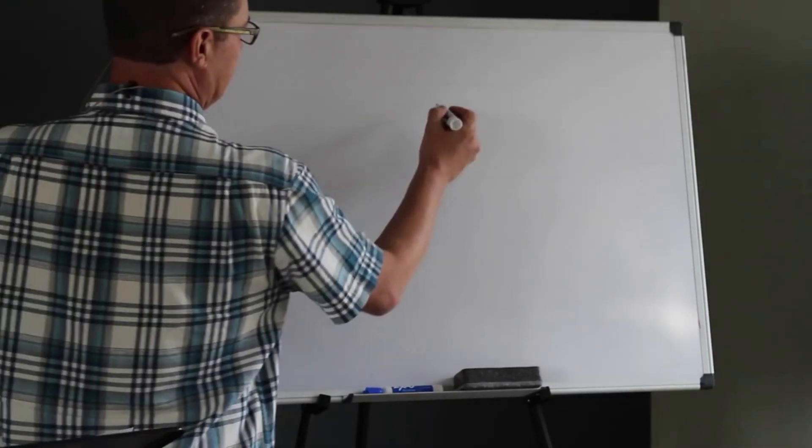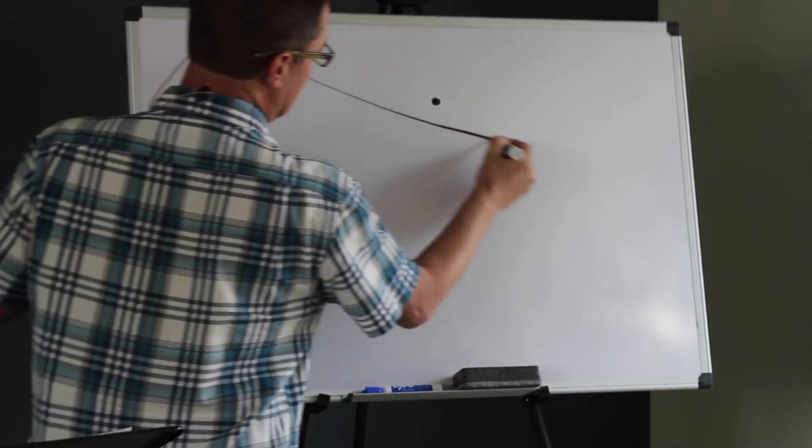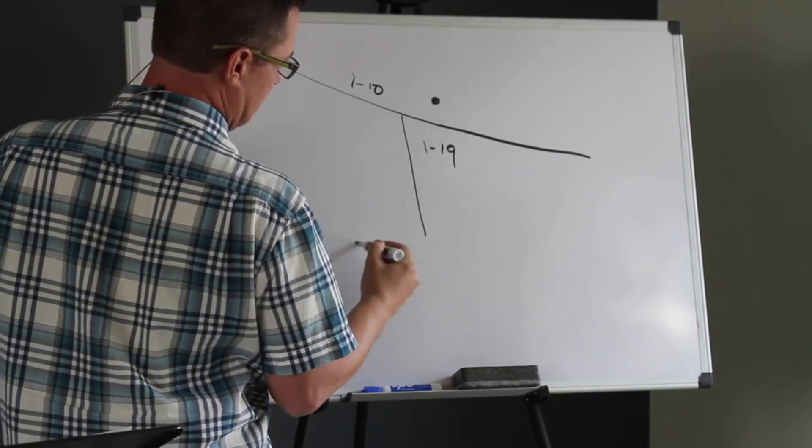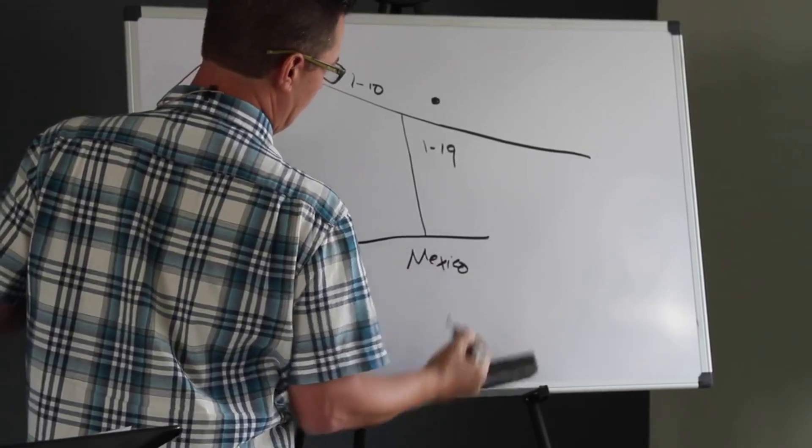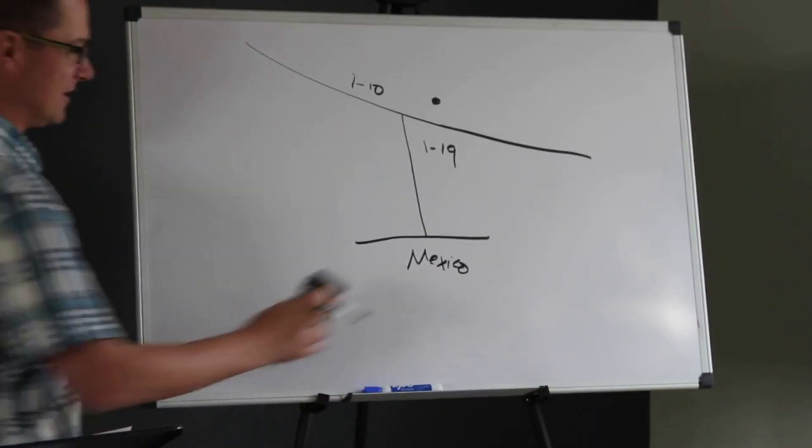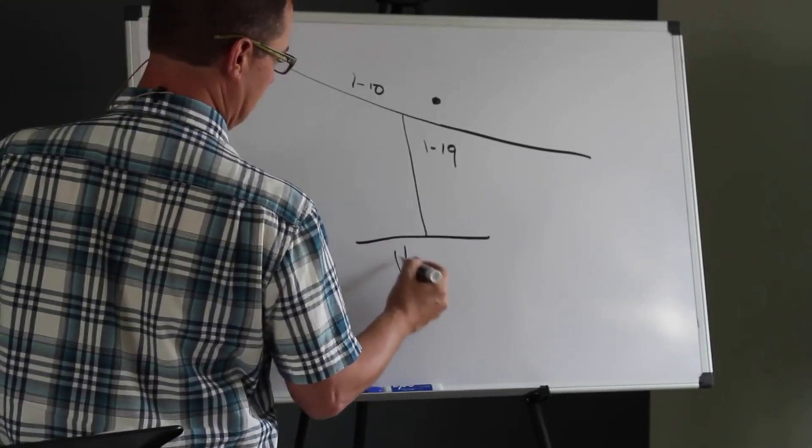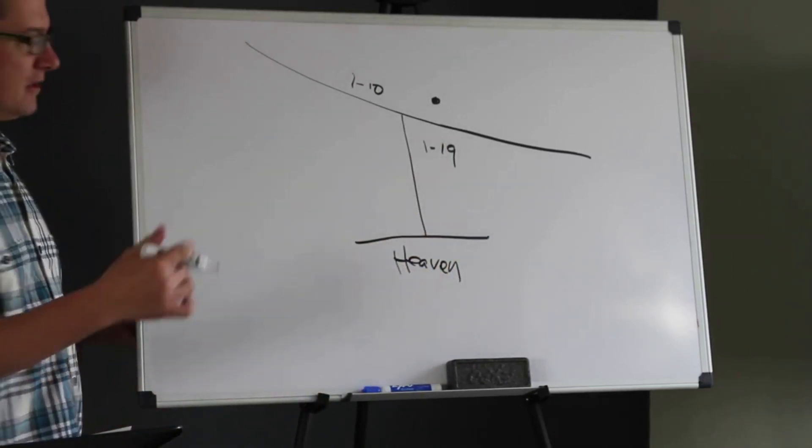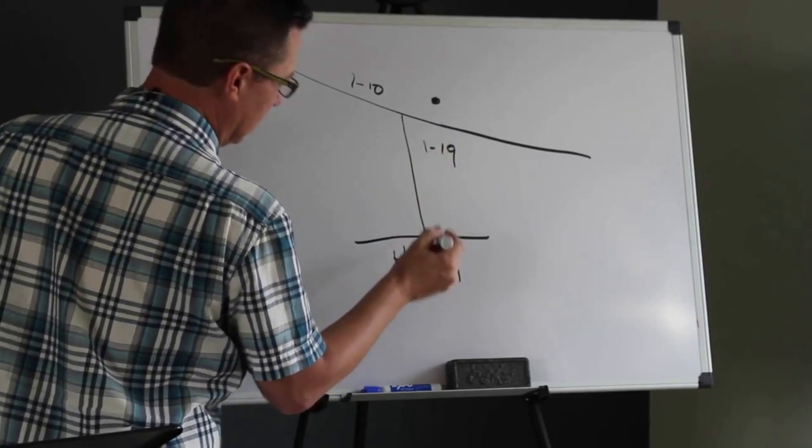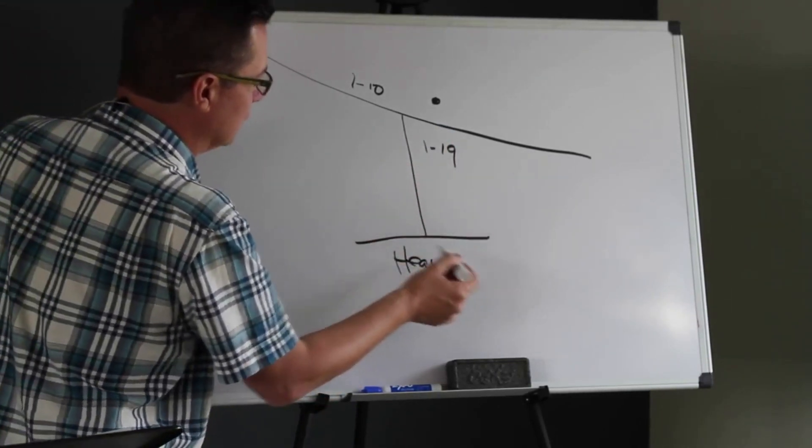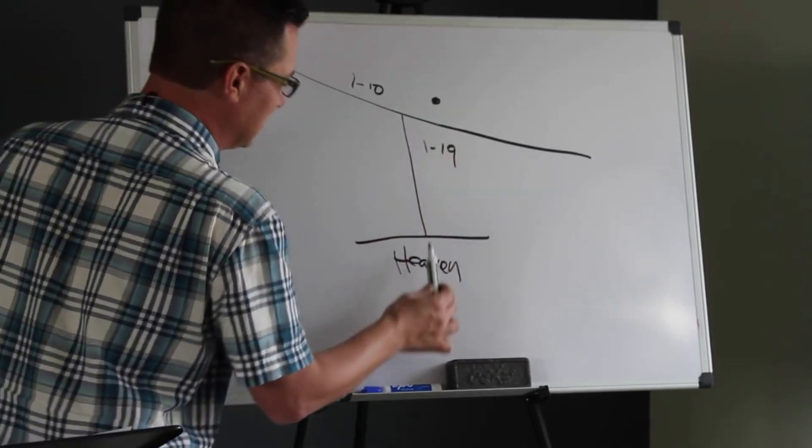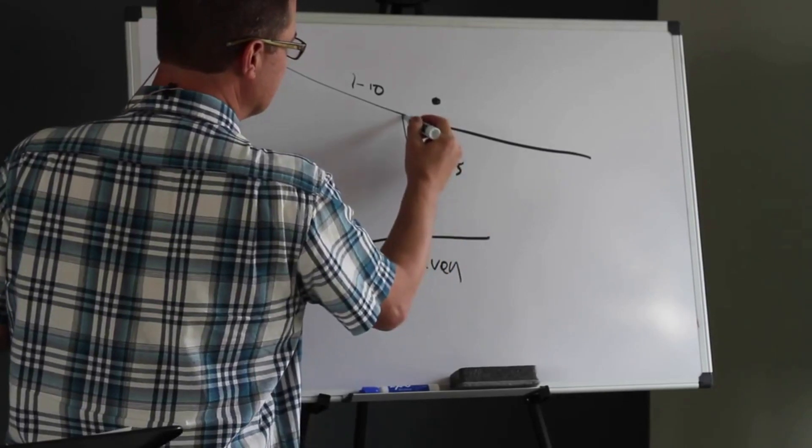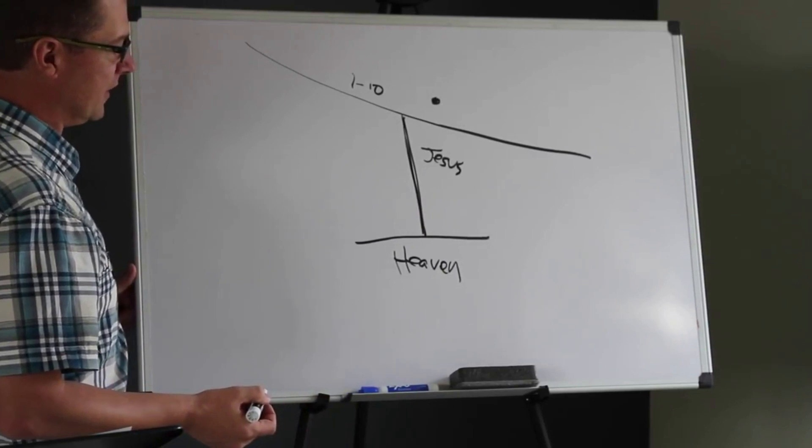One metaphor for understanding Jesus as the way is what I call the I-19 illustration. Let's look at that. So let's imagine this is Tucson and this is I-10. So this is I-19 and this is Mexico. Now, for the purposes of our illustration, Mexico is actually the kingdom of God. We'll just call it heaven. And I-19, for our purposes, is going to be the only way into heaven or Mexico.